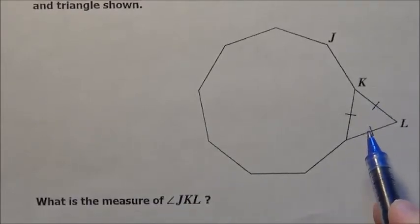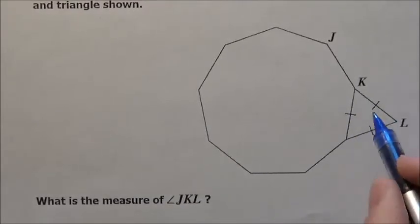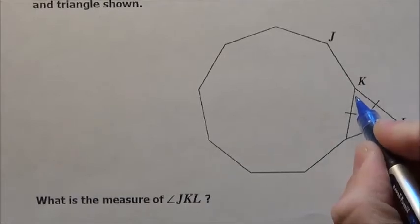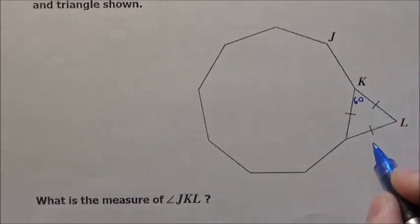Now it says that every one of these sides is the exact same length. Well, if all of them are the same, it's an equilateral, meaning each one of these angles is 60 degrees.